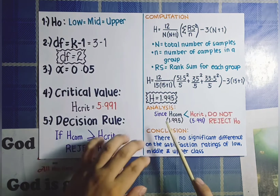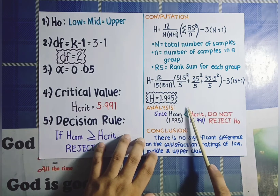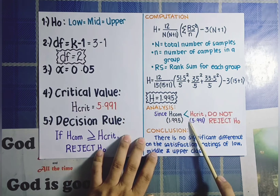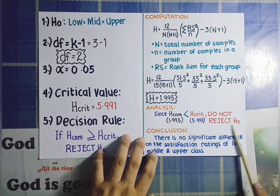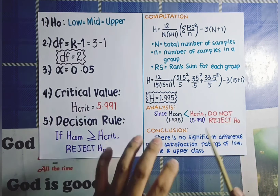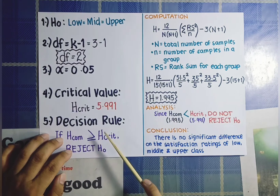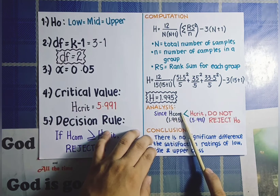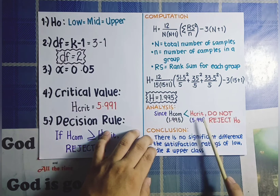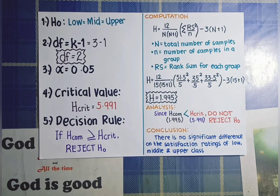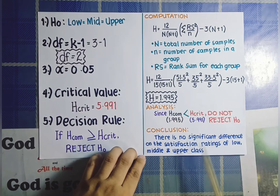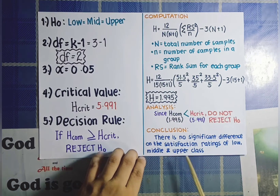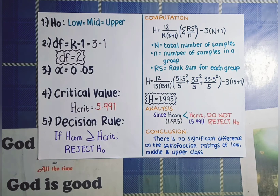For our analysis: since our computed H value of 1.995 is less than our critical H value of 5.991, we do not reject our null hypothesis. Our decision rule states that if computed H is greater than or equal to 5.991 we reject; since 1.995 is less than 5.991, we do not reject. Therefore, our conclusion is that there is no significant difference in the satisfaction ratings of lower, middle, and upper class. That is how we use the Kruskal-Wallis H Test to determine significant differences among three or more groups of independent, non-normally distributed data. Thank you for listening and good day.